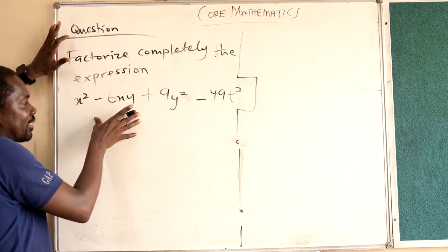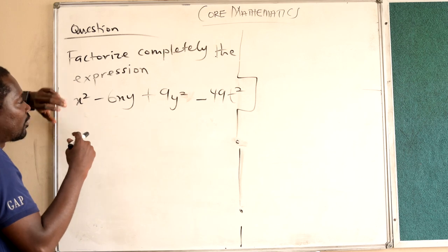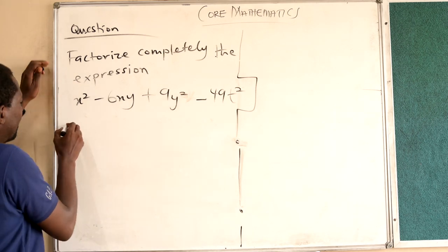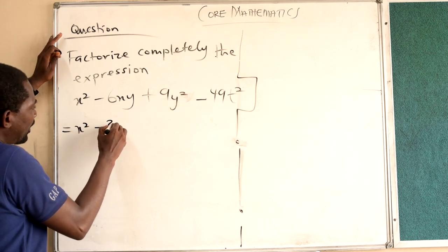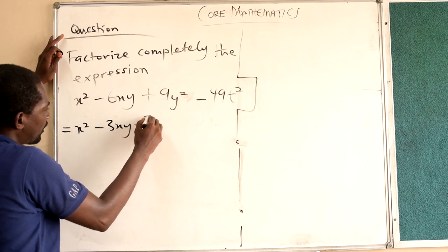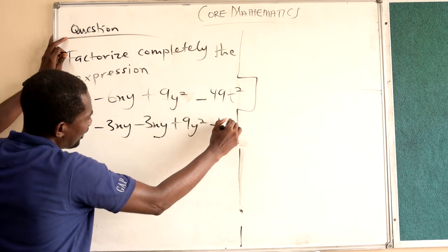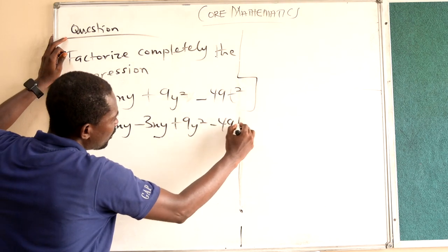This negative 6xy will open it up. This will be the same as x squared minus 3xy minus 3xy plus 9y squared minus 49t squared.